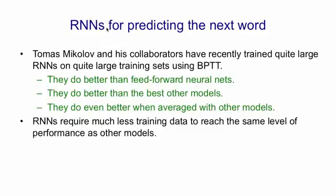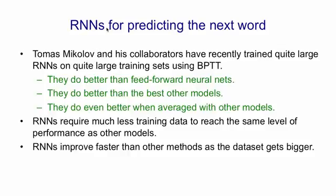One interesting property of the RNNs is that they require less training data than the other methods to reach a given level of performance. More importantly, as the datasets get bigger, the RNNs improve faster than the other methods. So methods like trigrams, for example, do get better with bigger datasets, but it's a very slow process. You need to double the size of the dataset to get a small improvement.